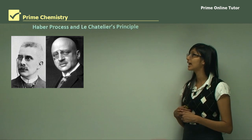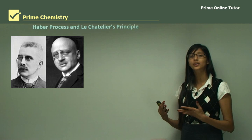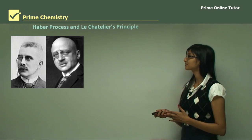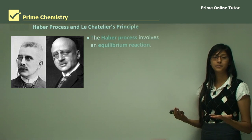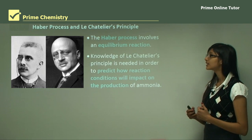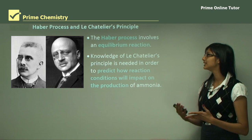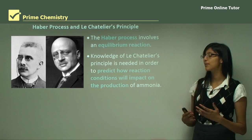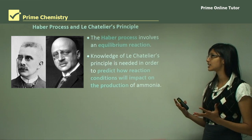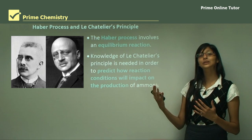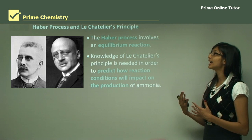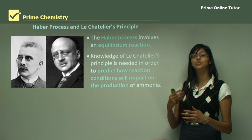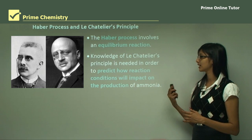In this topic, we will look at how Le Chatelier's principle determines the equilibrium position of the Haber process. The Haber process involves an equilibrium reaction, and knowledge of Le Chatelier's principle is needed to predict reaction conditions that will impact the production of ammonia. We want conditions that will increase the yield of ammonia in the reaction process.